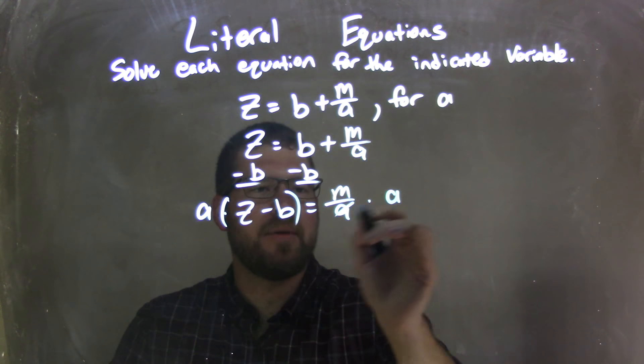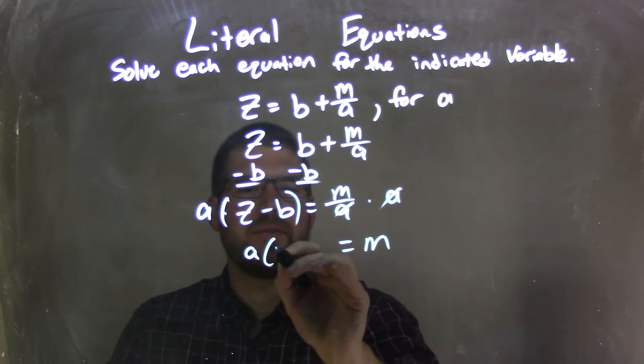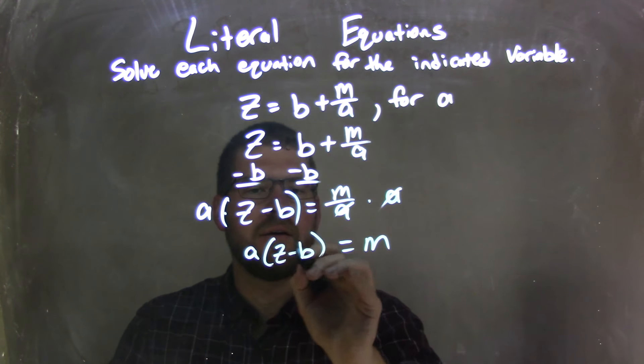What that does is it eliminates the a on the right, leaving me with just the m, and I have a times z minus b on the left.